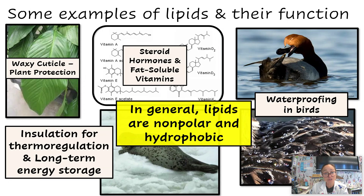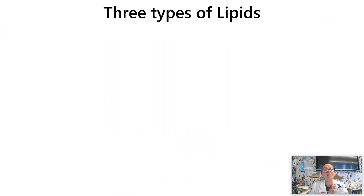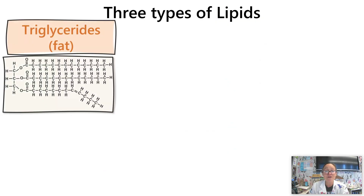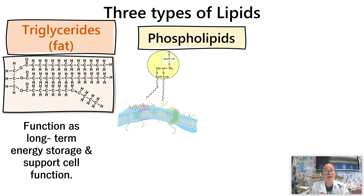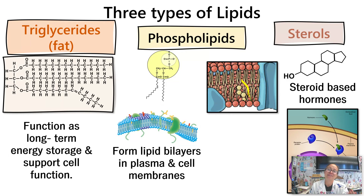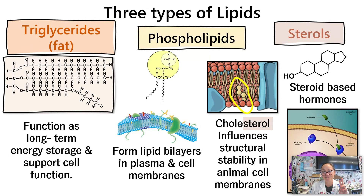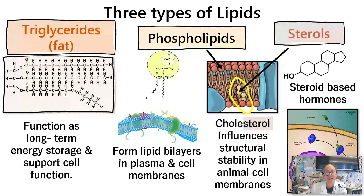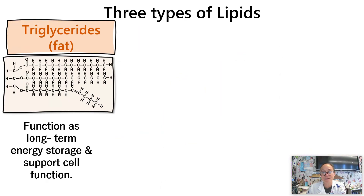We'll see more examples of lipids throughout the year, but our three main types discussed in this video are triglycerides, phospholipids, and sterols. Phospholipids and sterols can both be found in our cell membranes. Triglycerides are like the fat we store on our bodies — about 95% of lipids on Earth are triglycerides — and when we get into unit 3 and talk about the Krebs cycle and mitochondria, we'll see how fat is a long-term energy storage molecule. Let's zoom in on triglycerides.